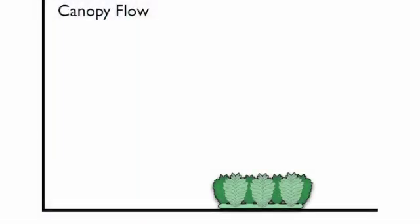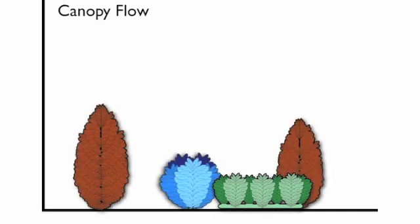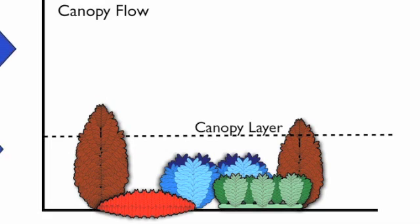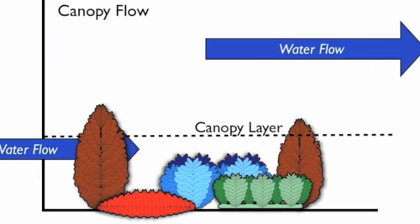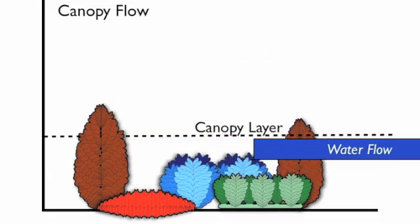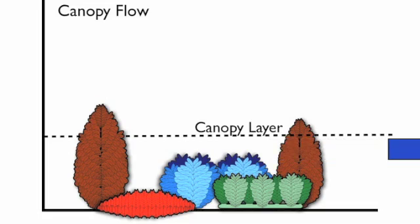It turns out there's a set of models that are associated with situations where there's lots of objects dipping up into flow, and these are called canopy flows. One of the main characters of canopy flows is that they actually slow down a set of fluid so that there are effectively two sets of fluid velocity, one within the community and one above the community.